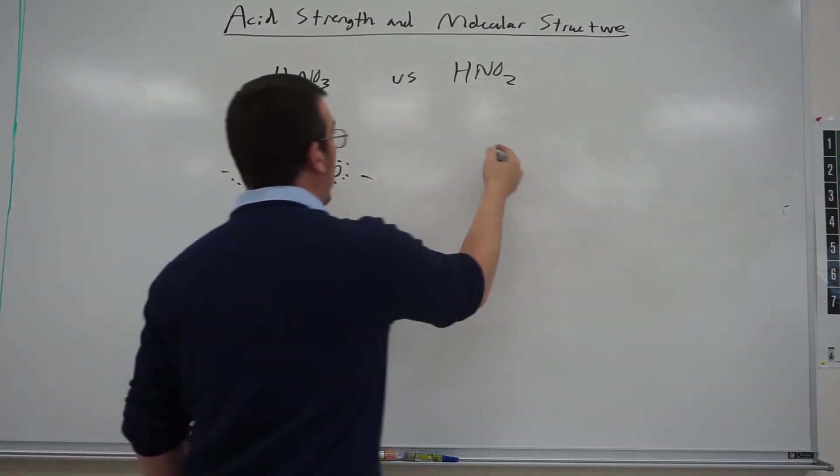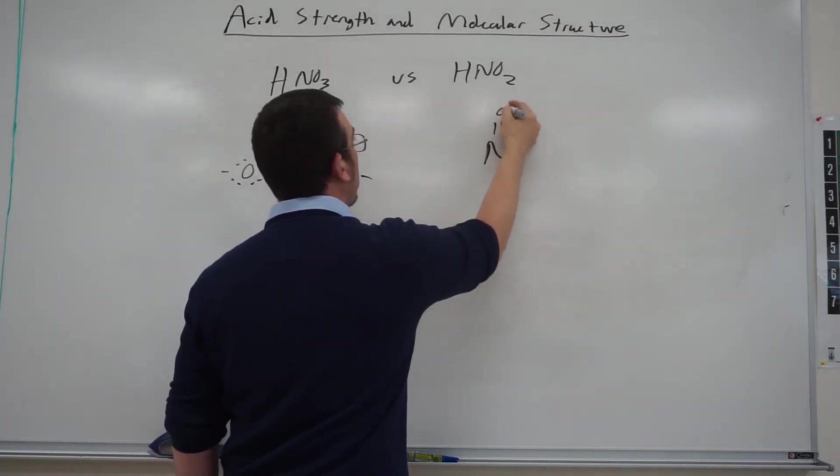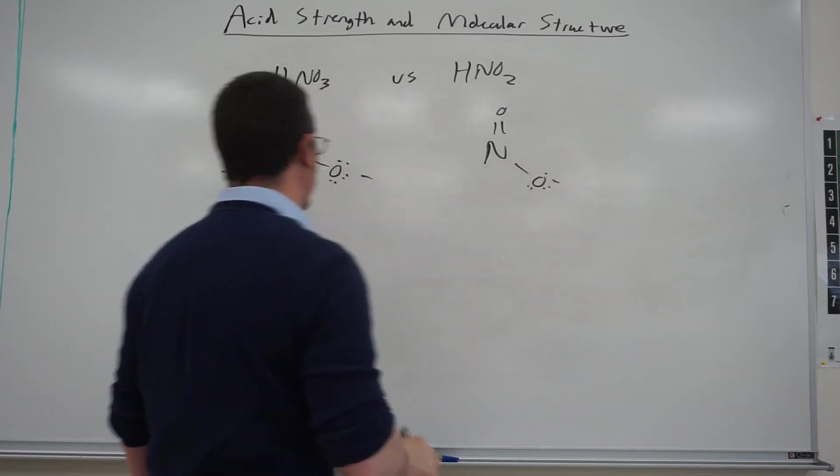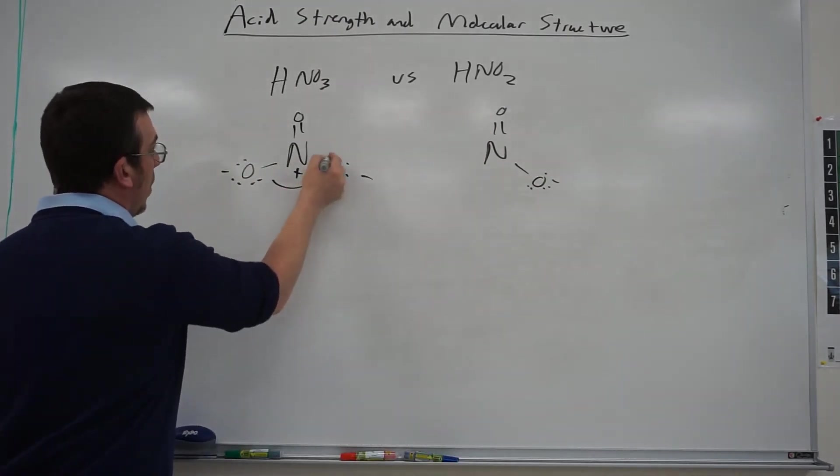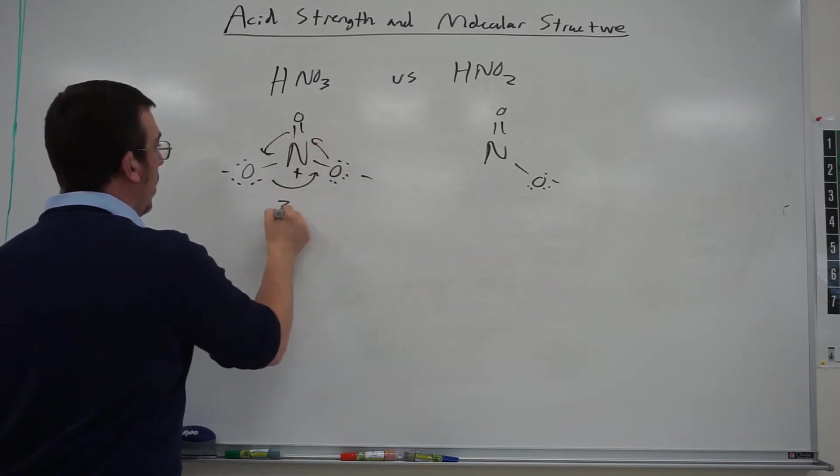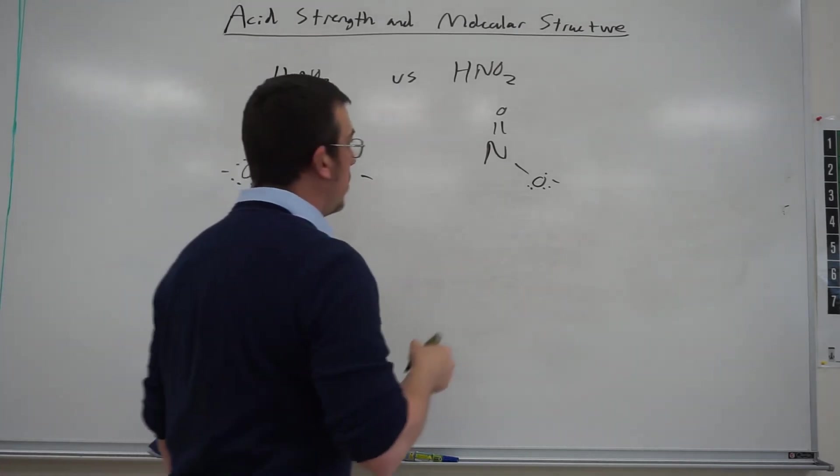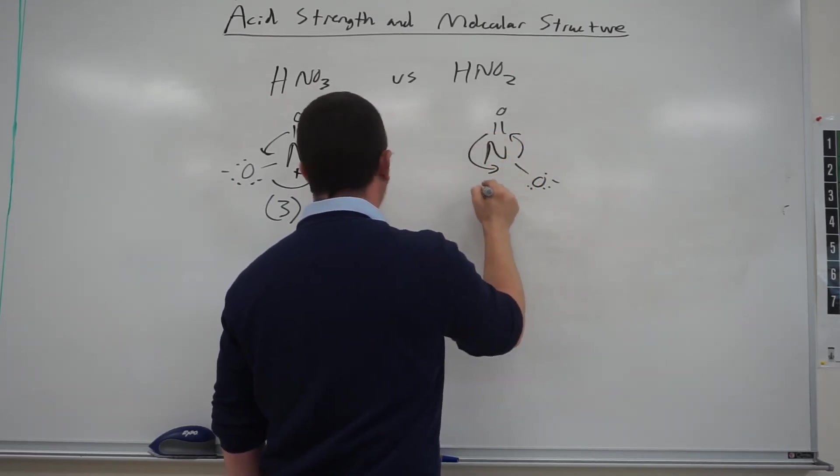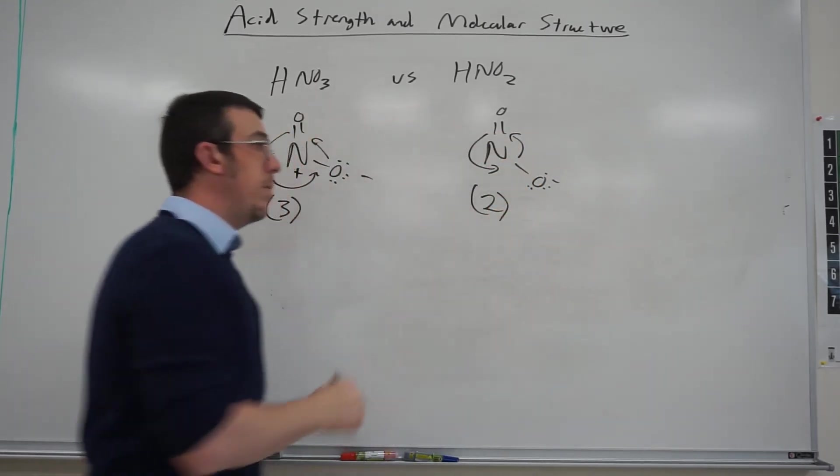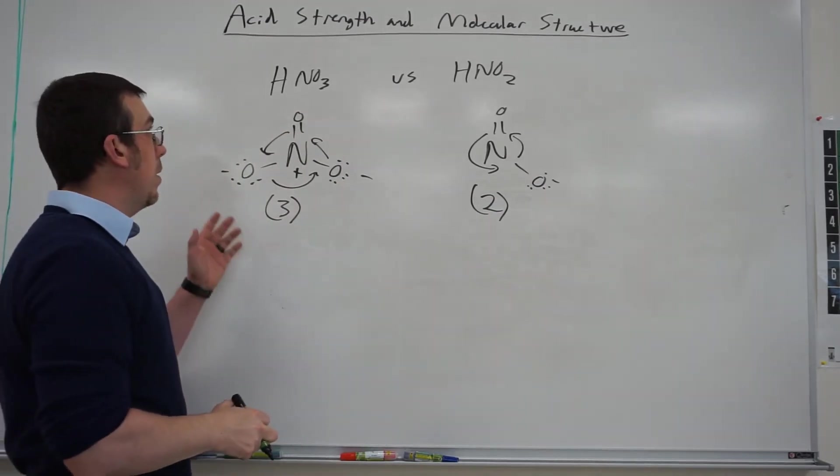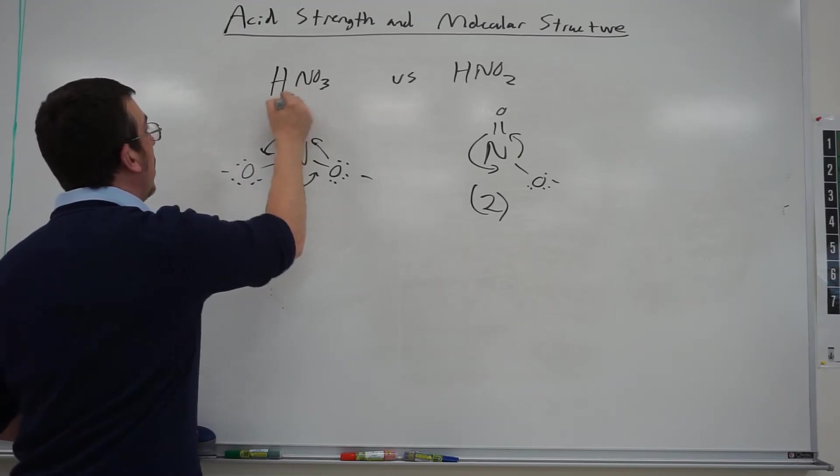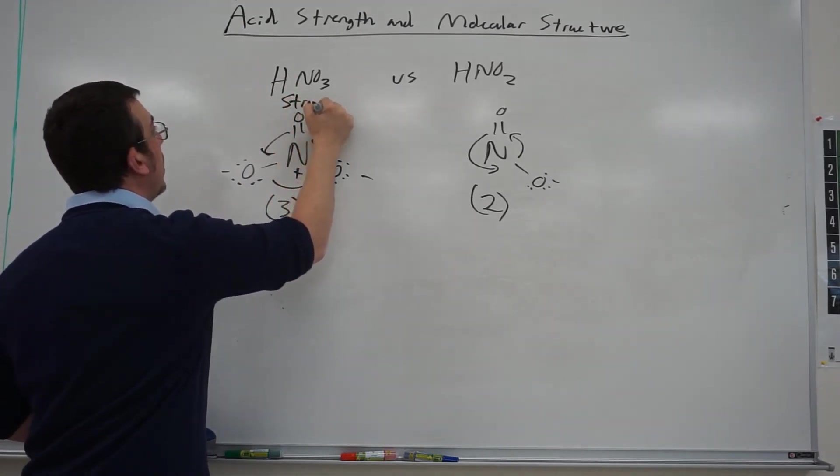And over here we have this blue structure. So we can see from here that we can form three resonance structures with a nitrate, whereas here we only have two resonance structures. So right off the bat we can see that the nitrate is going to have more stability, so the nitric acid will be a strong acid, whereas the nitrous acid is going to be a weak acid.